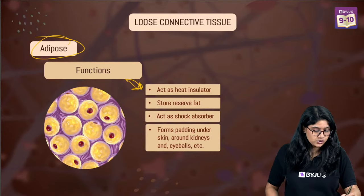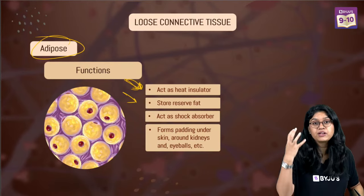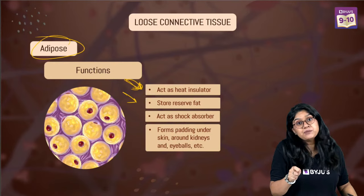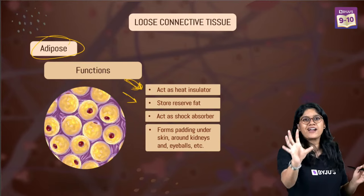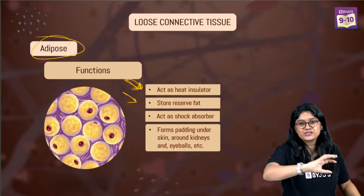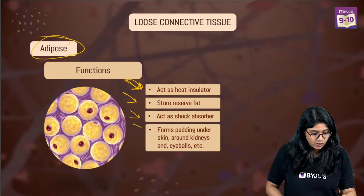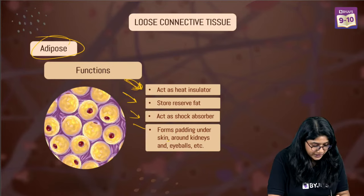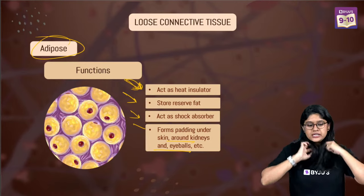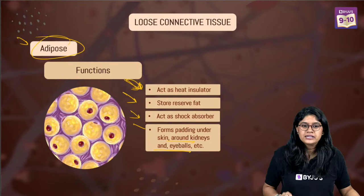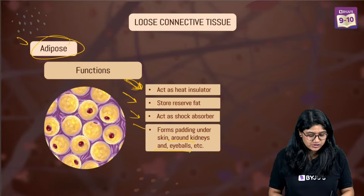They also reserve fat - fats are really very important because they store energy, and whenever there is a need the fat cell will provide energy. They act as a shock absorber - just like cushions, if you fall, the cushion absorbs the shock and protects from harmful injury with less damage to the body. They form padding under your skin, around your kidneys and near your eyeballs. The correct answer to which tissue provides insulation is the adipose tissue.